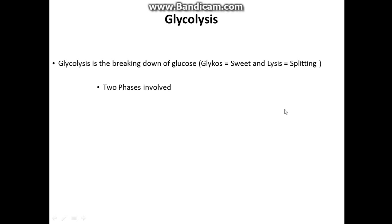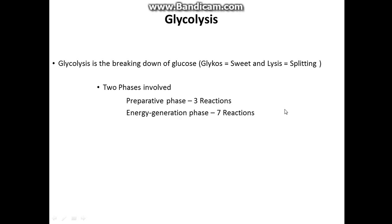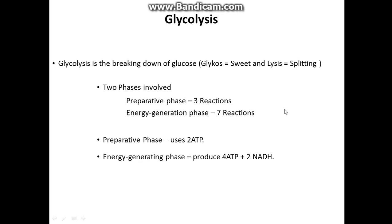There are two phases involved. We're doing phase 1, which is the preparative phase — only three reactions, so a nice and quick video. Then there's the energy generation phase, which will be the next video and has seven reactions. The preparative phase uses 2 ATP, and the energy generating phase produces 4 ATP and 2 NADH.